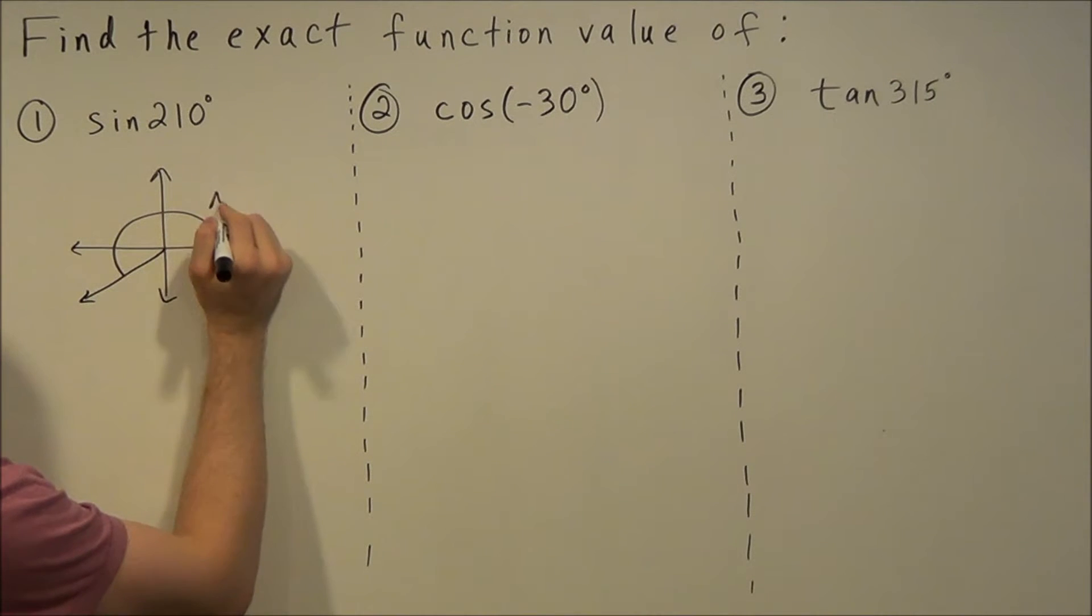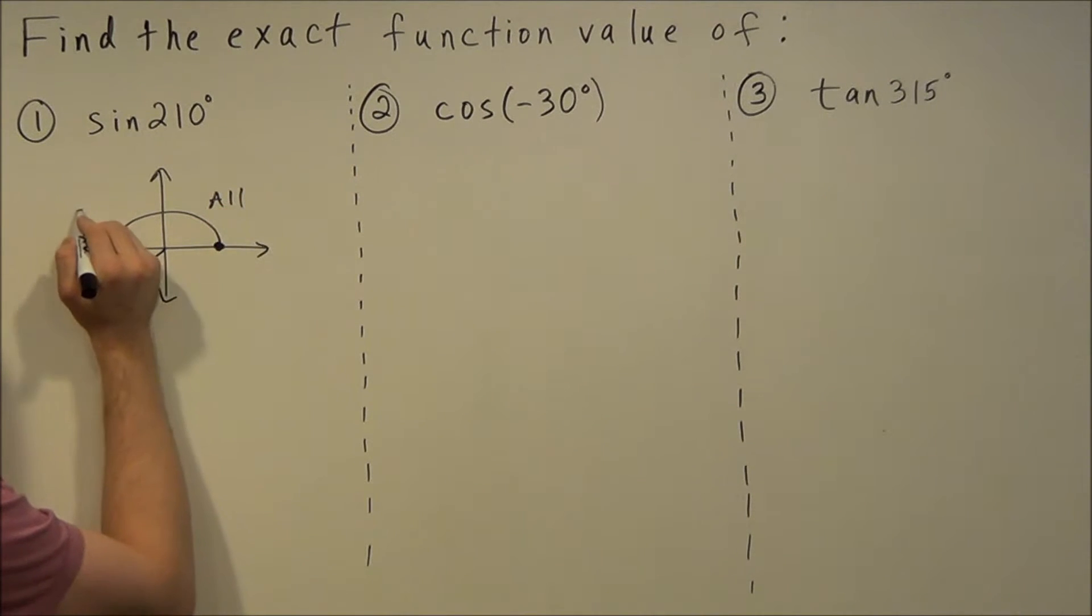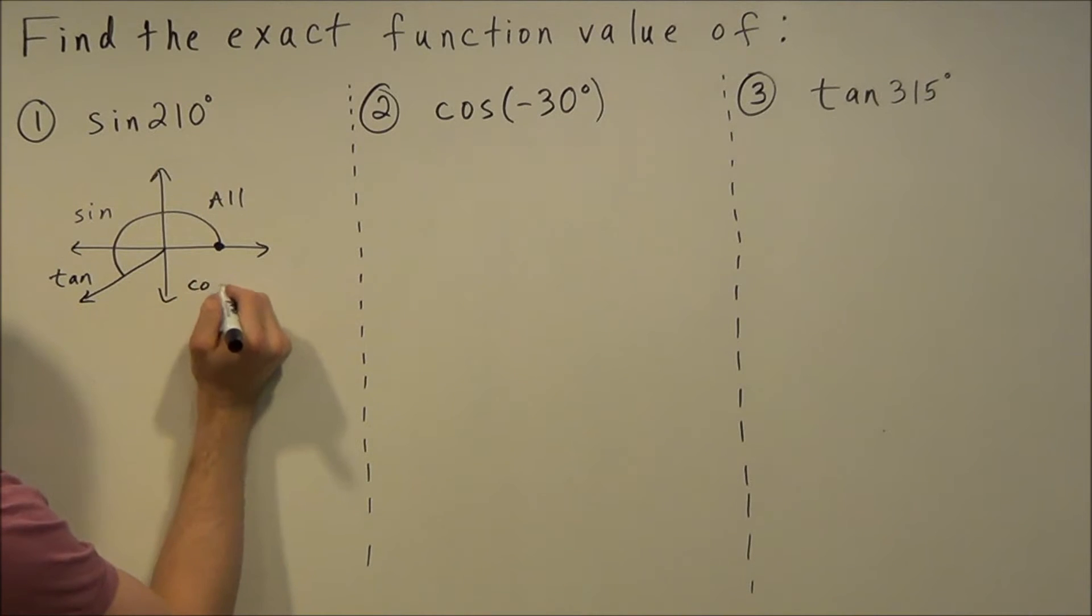Next thing we want to follow is note that all of the trig functions are positive in quadrant one, sine is positive in quadrant two, tangent is positive in quadrant three, and cosine is positive in quadrant four.